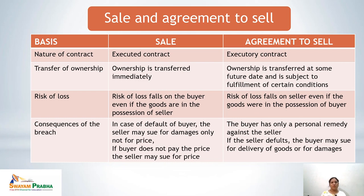On the basis of transfer of ownership, in a sale, ownership is transferred immediately when the activity is performed. But in an agreement to sell, ownership will be transferred at some future date upon the fulfillment of certain conditions. In a sale there is immediate transfer of ownership, while in an agreement to sell ownership is transferred in the future, not with the contract.